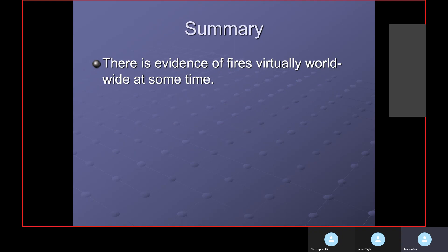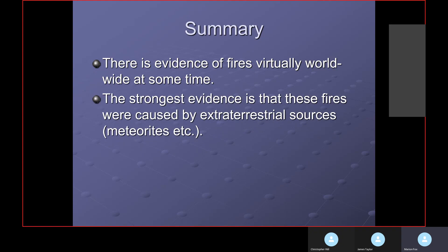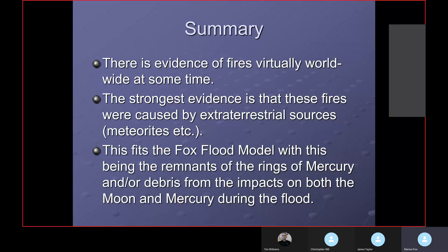There's evidence of fires virtually worldwide at some time. Evidence exists. The strongest evidence that these fires were caused by extraterrestrial sources are probably meteorites. This fits the Fox flood model with this being the remnants of the rings of Mercury and/or the impacts of bodies during the flood. The iridium that doesn't have shocked rocks with it was laid and came in and hit the water and settled in the water. So it didn't create shocked rocks. The KT boundary was after the flood and it has the shocked rocks in it. That's my explanation for it. Are there any questions?